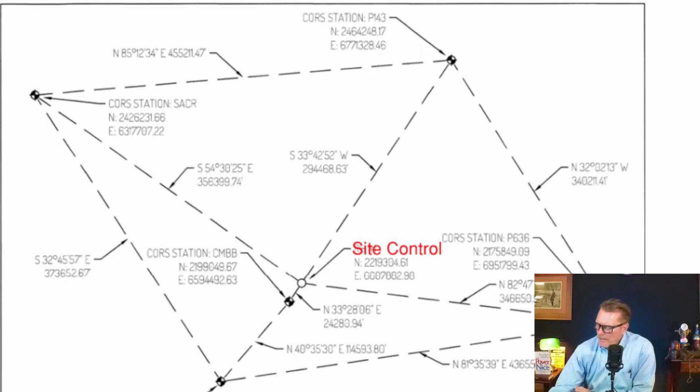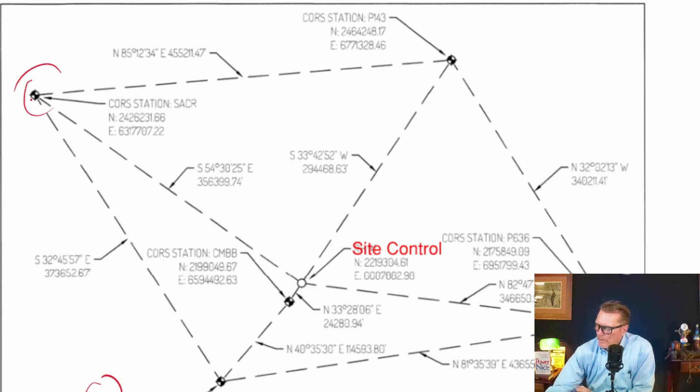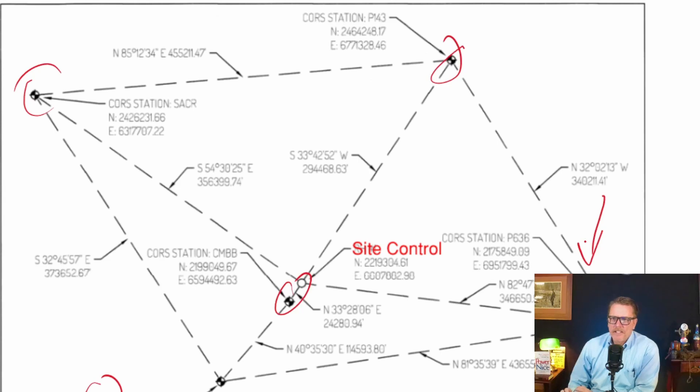The Public Resource Code requires that you tie into a minimum of two core stations. Looking at the screen you'll see that we have one, two, three, four, five core stations.